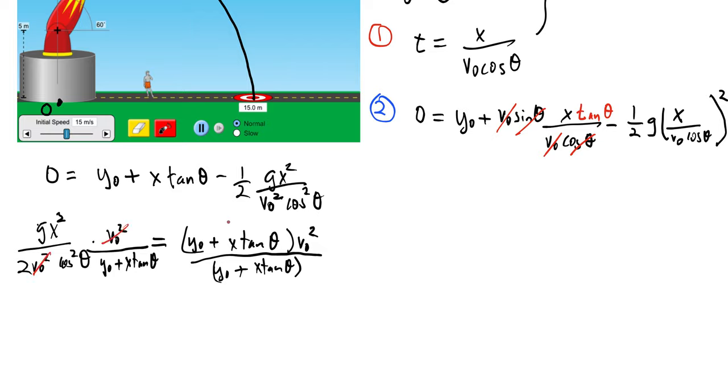V0 squareds cancel, the sum term cancels, and we're left with V0 squared over here. So that becomes V0 squared equals the final algebraic answer, which is g x squared all over 2 cos squared theta times y0 plus x tan theta.